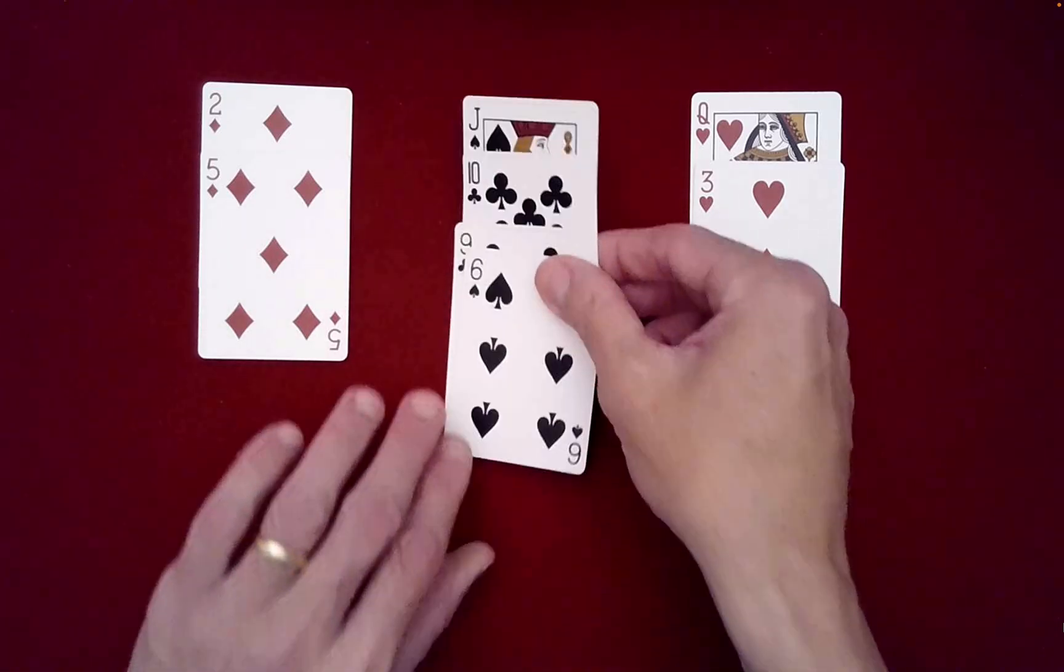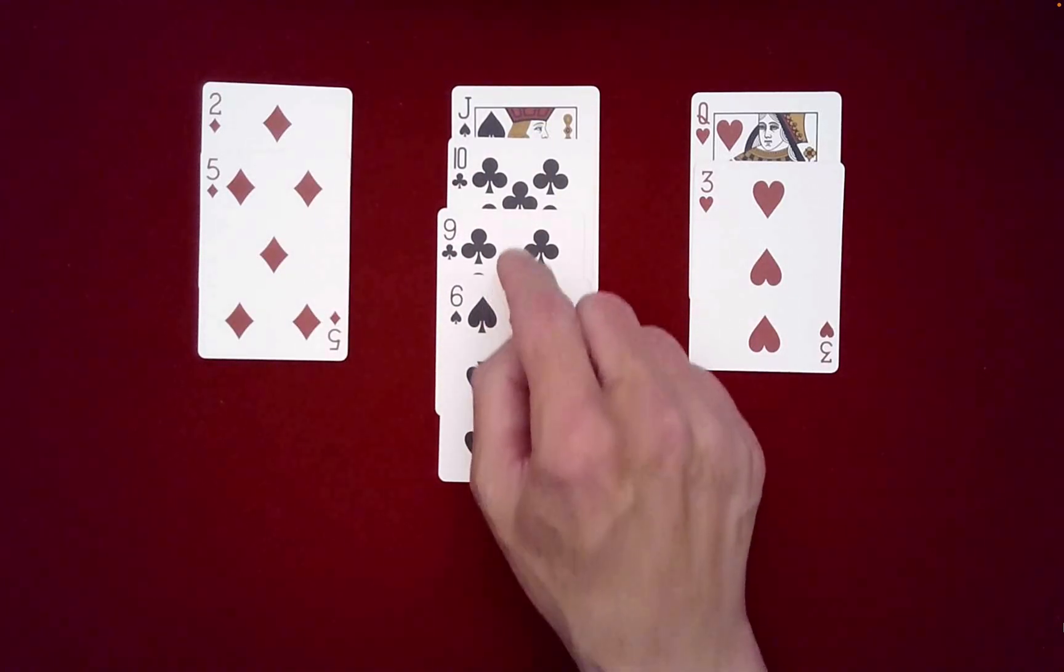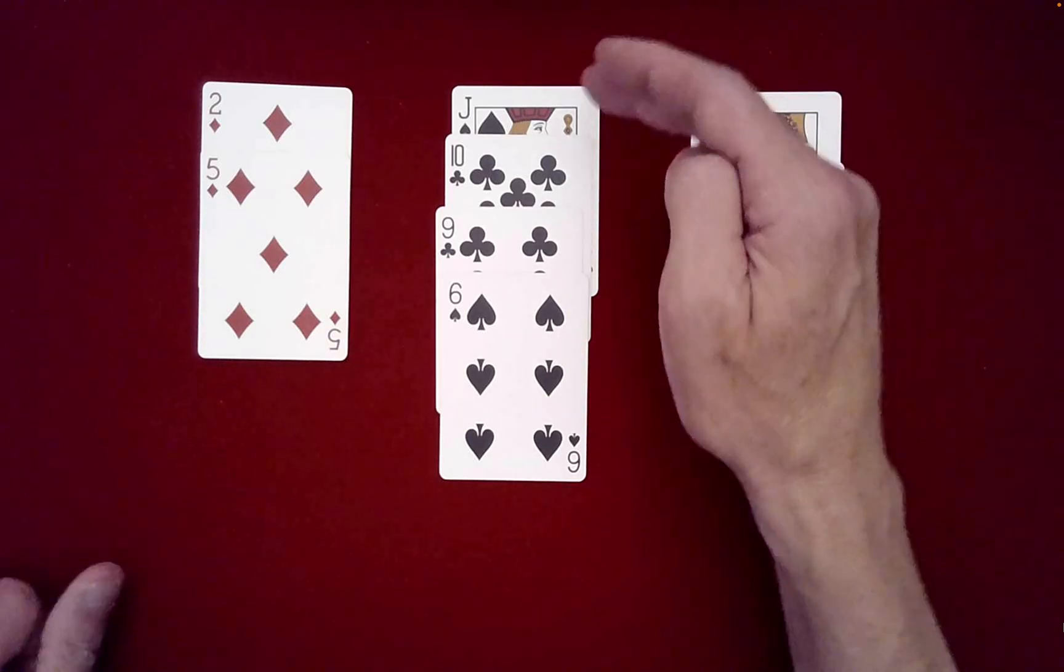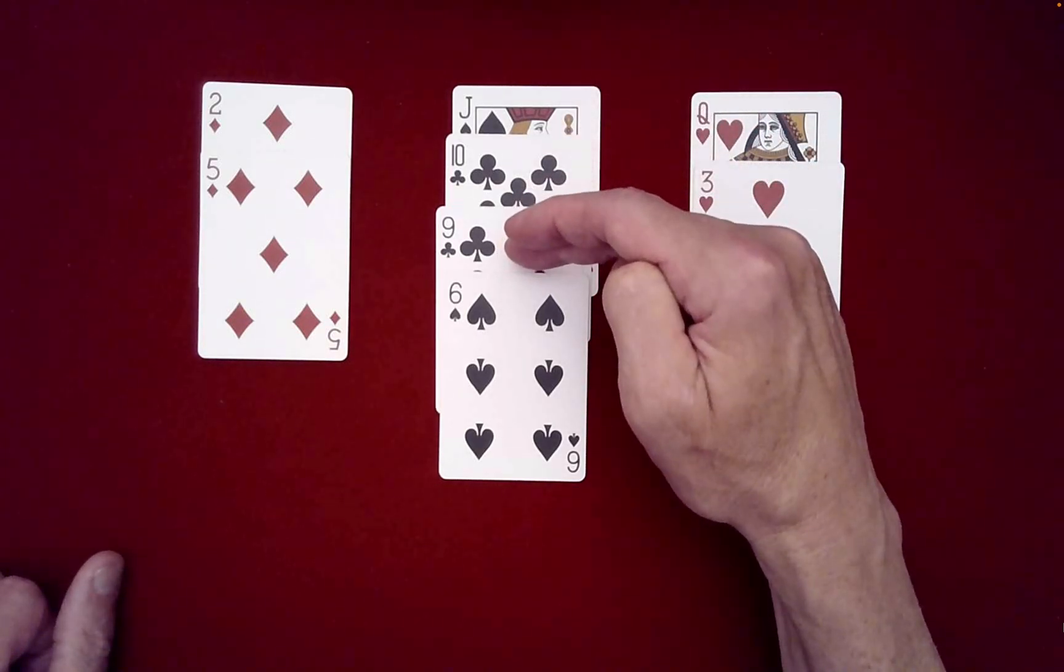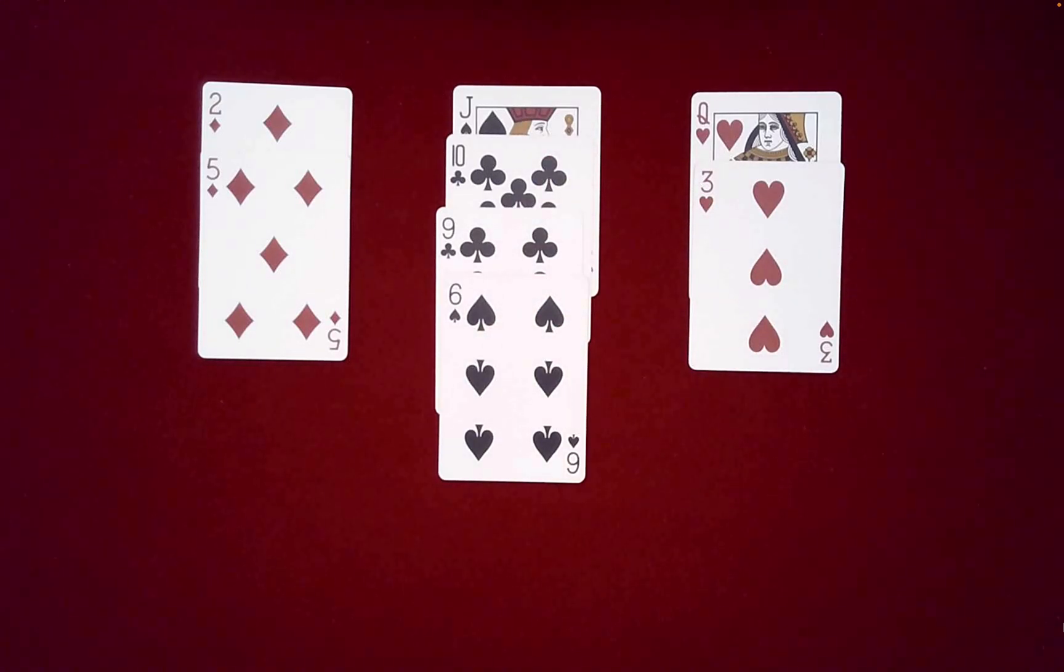What about the middle? I said that it would be a mixture of even and odds, but nonetheless they would add up to an even number. Is that true? Do we have odds and evens? Oh yeah, even, odd, even, odd. Very good, we do have a mixture there, which is nice. Do they add up to an even number? Well, Jack's 11 plus 9 is 20, 30, 36. They do indeed.